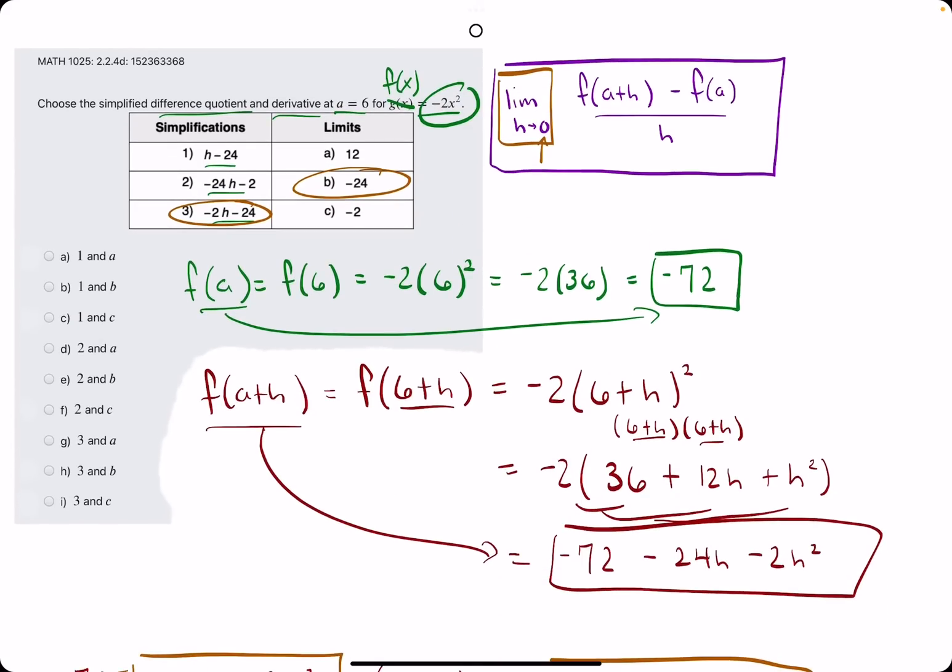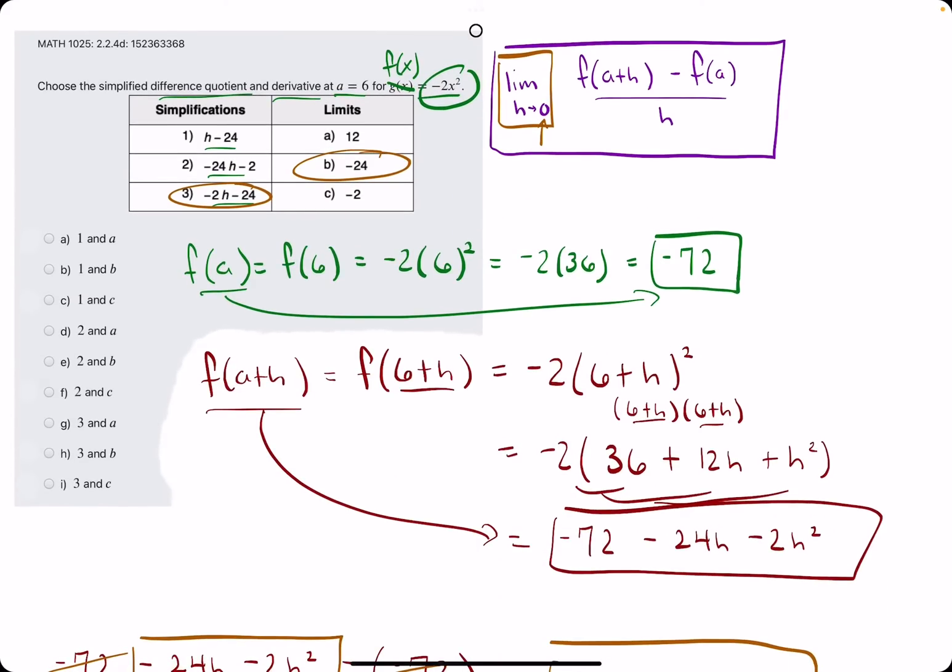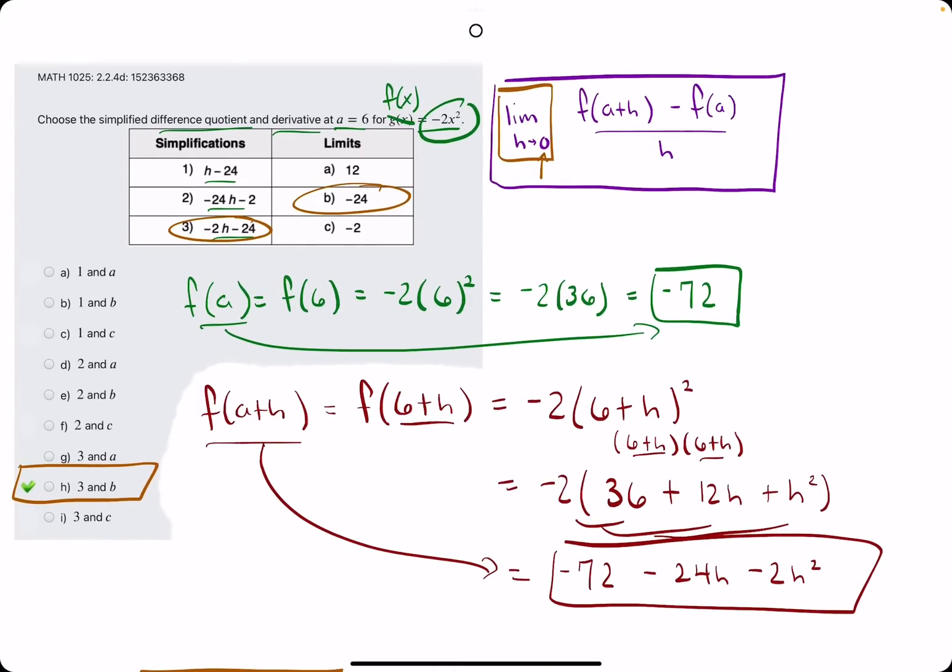So we're looking at 3 and b. Looks like option h. Break out the eraser to see that h is our answer.